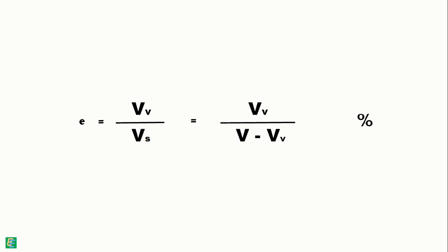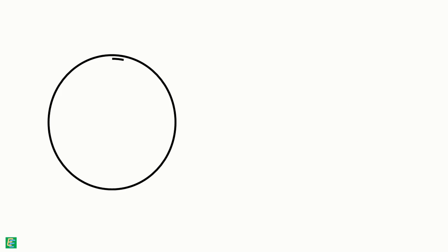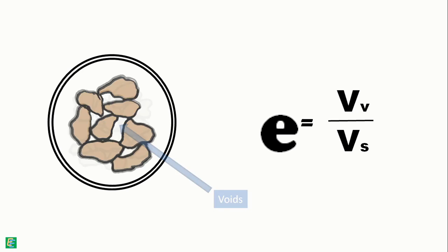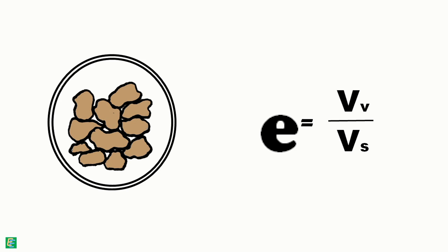It is not expressed in percentage like water content. Loose soils have relatively high volume of voids, hence in the equation they have high value of the numerator and hence higher value of void ratio. If the same soil is compacted and made dense, it will have relatively small amount of voids which will make its numerator small and will result in lower value of void ratio.